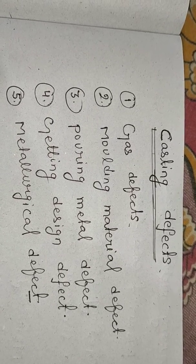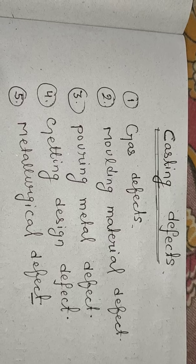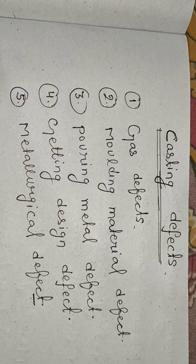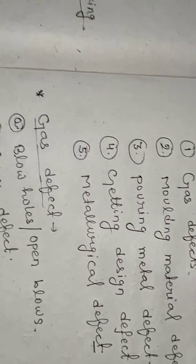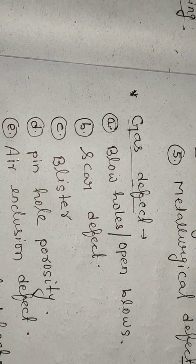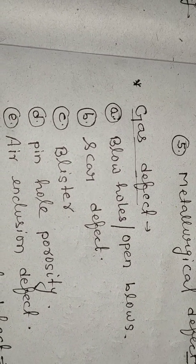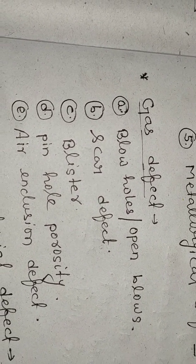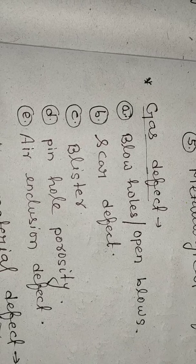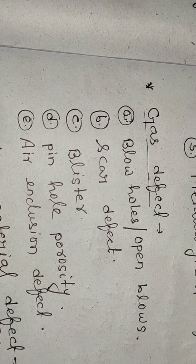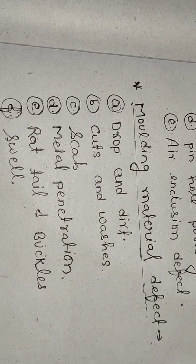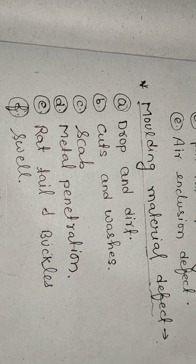We will study the types of gas defects. There are four or five types of gas defects: first is blowholes, second is open blows, third is scar defect, fourth is blister, and fifth is pinhole porosity or air inclusion defects. Second is molding material defect.